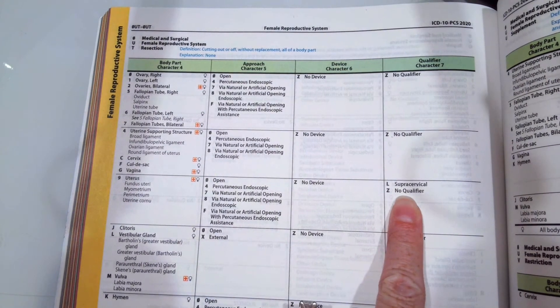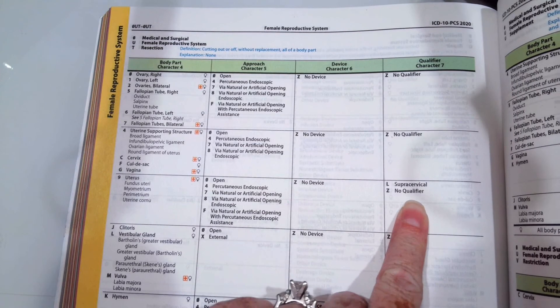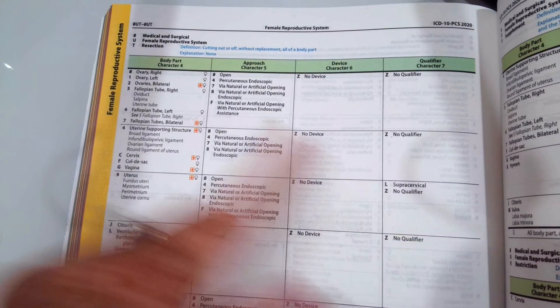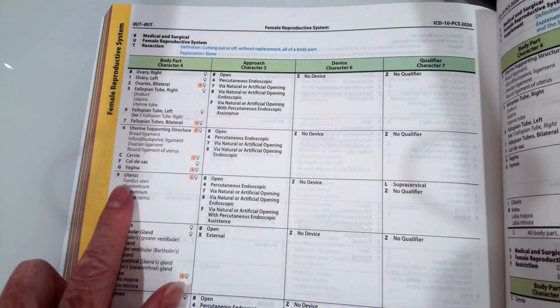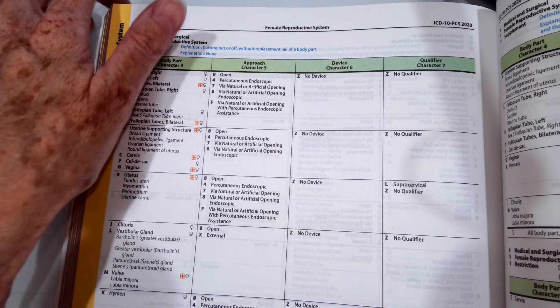Qualifier. Our documentation did not say it was super cervical, so we're going to pick Z, no qualifier. So our code is 0-U-T-9-7-Z-Z.